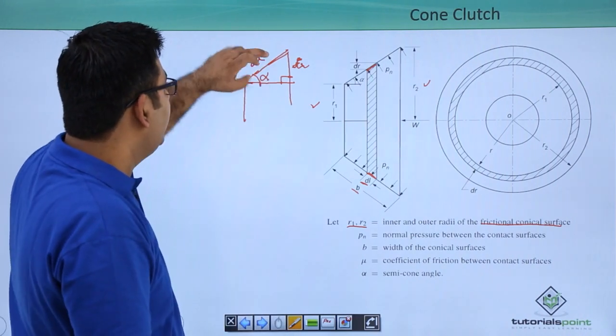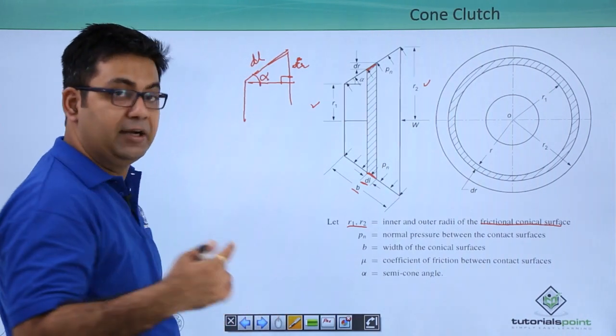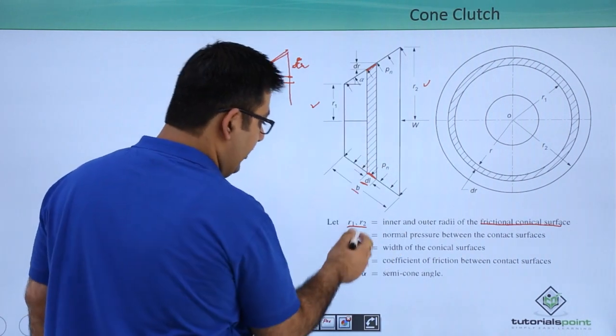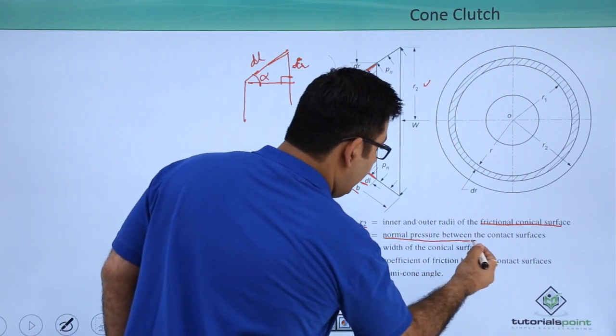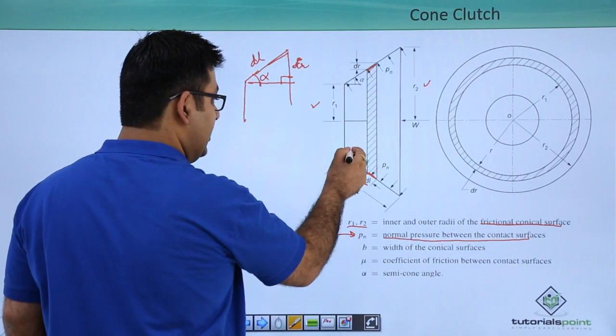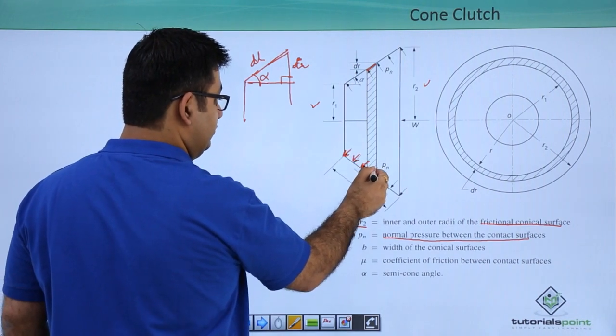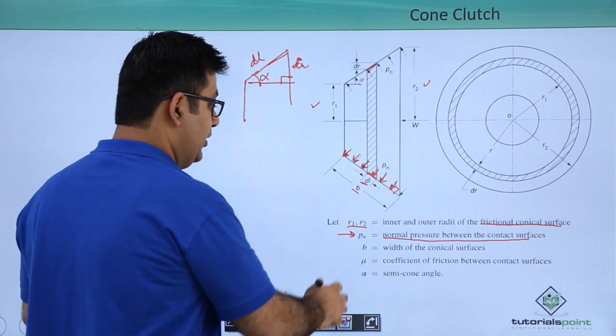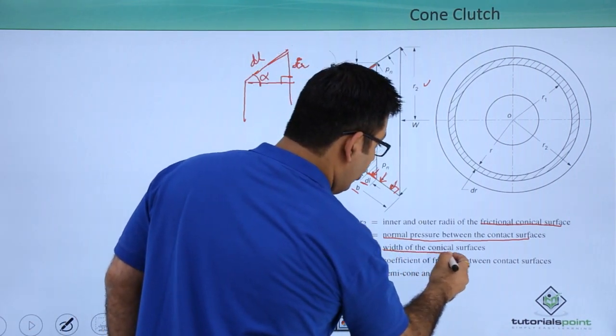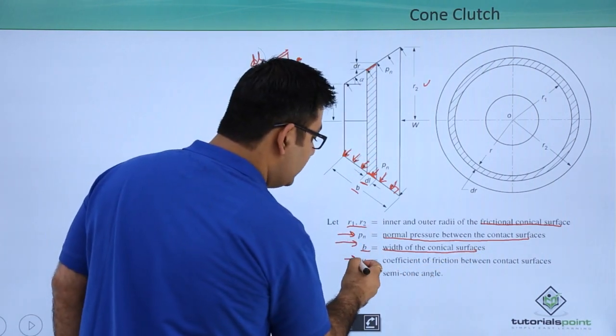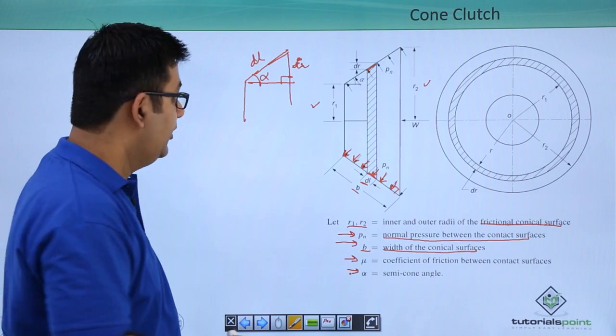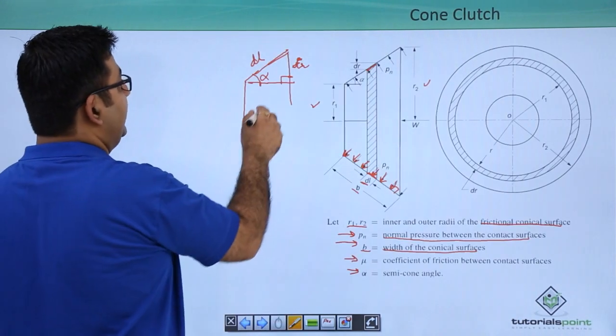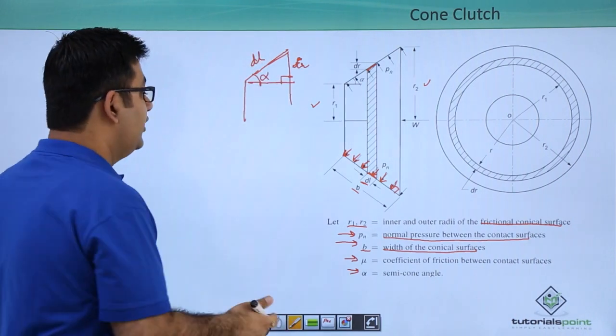So sin alpha is dr by dl. Let's define these now: we have dl, dr, we have alpha, pn is the normal pressure between the contact surfaces normal to the inclined surface, b is the width of the conical surface, mu is the coefficient of friction, and alpha is the semicone angle.